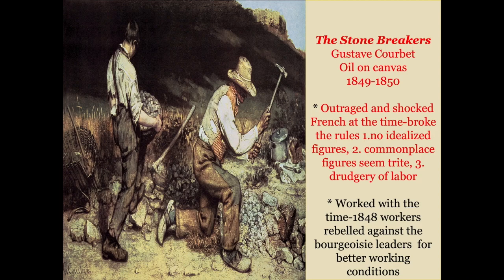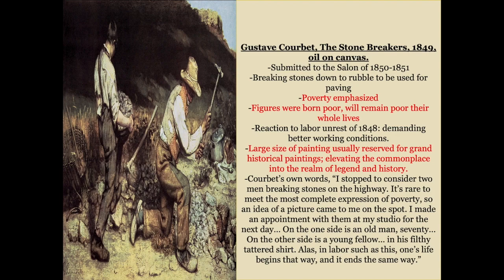Courbet was outraged because these people lived harsh lives that others just disregarded. The juxtaposition of the young man and the old man really shows you what does this young man have to look forward to — a harsh life of tattered clothing and manual labor leaving him in poverty forever. We see a rural background, their meals nearby, a young man with a torn shirt. When Courbet exhibited this at a salon, it outraged the French aristocracy who considered themselves judges of good painting. It broke the rules because these figures are shown unidealized, distressed — we don't even see their faces — and it shows the drudgery of common labor.